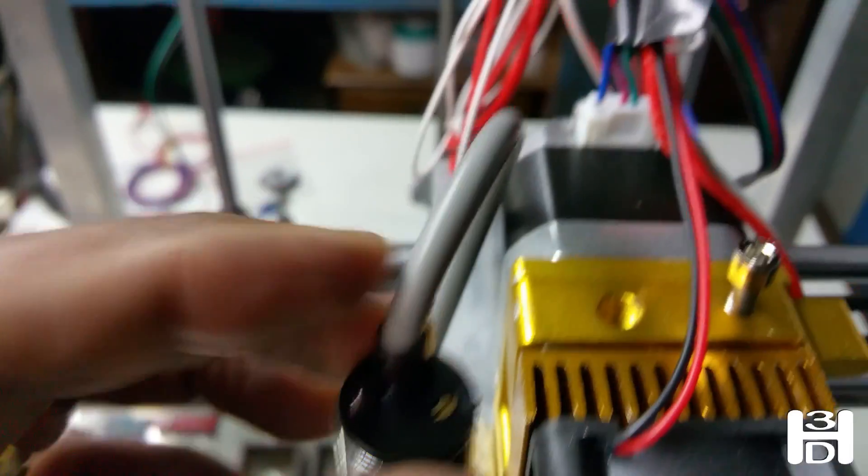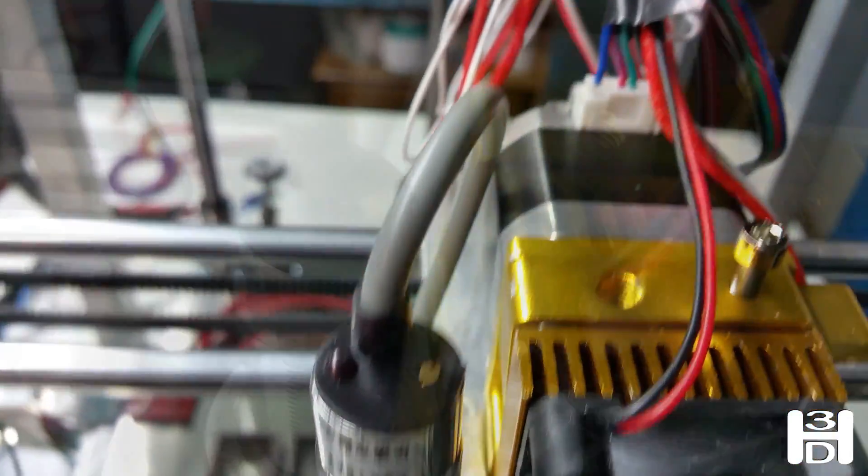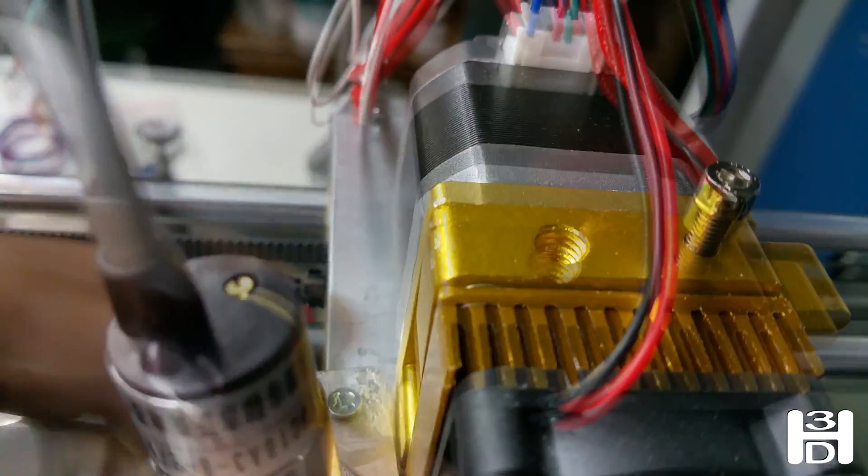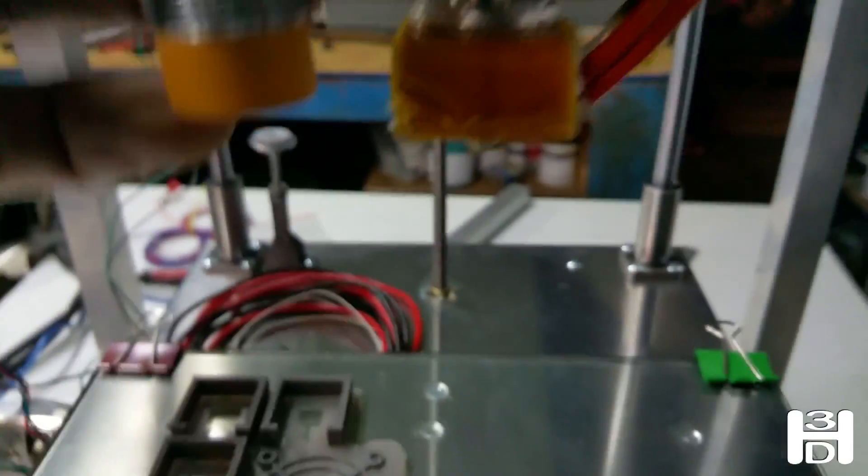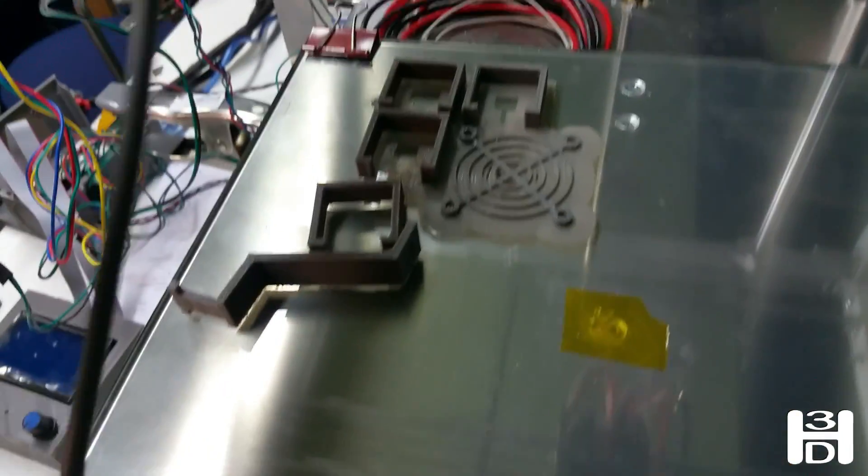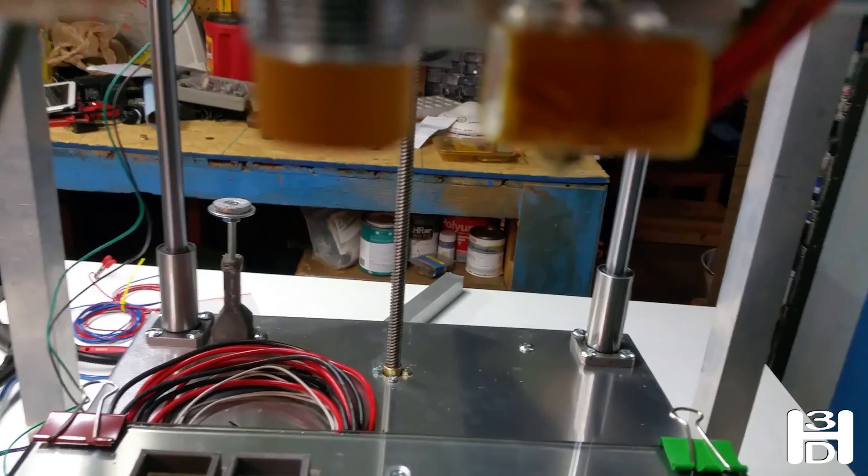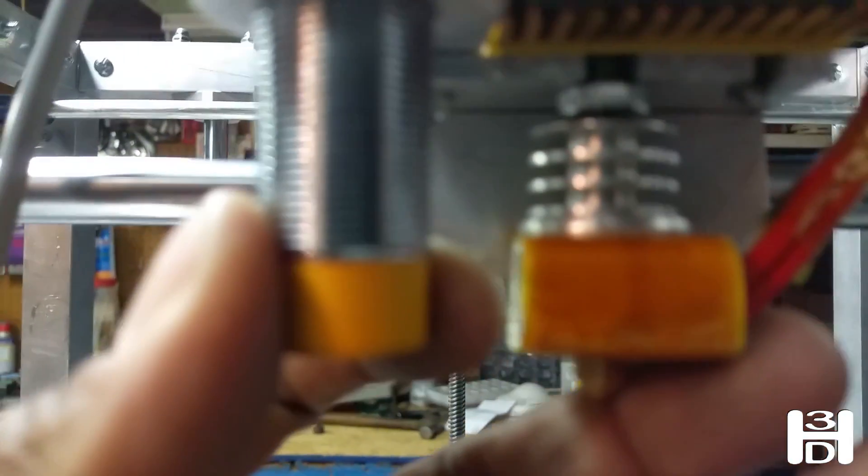When we do install, we want to install it with the wire side to the back. In general, for our application, we'll have this just about at the level of the heater block. So right about at the heater block level. You can see that, yeah, that's close. That'll be our starting point.